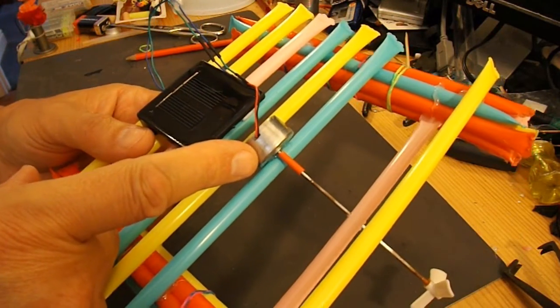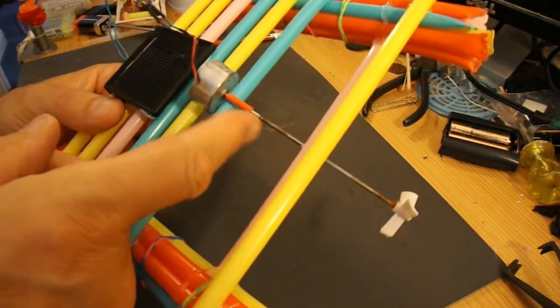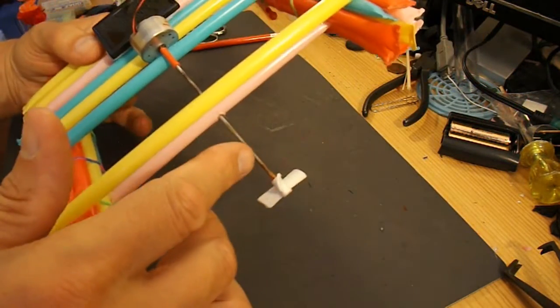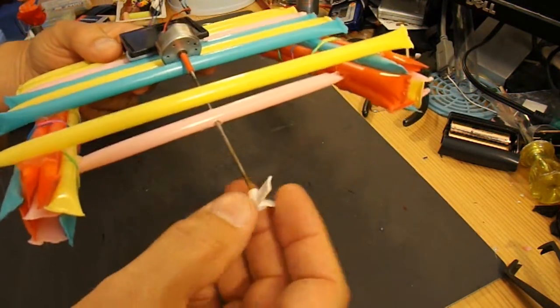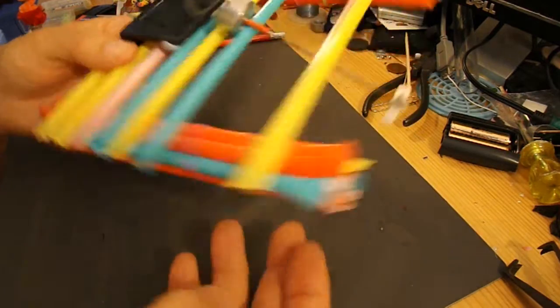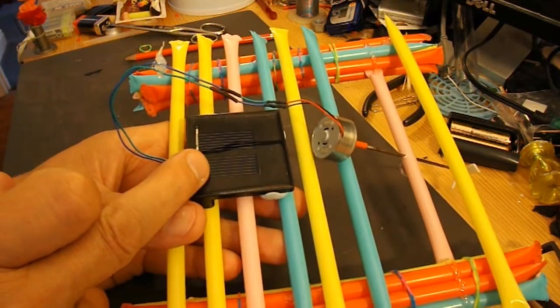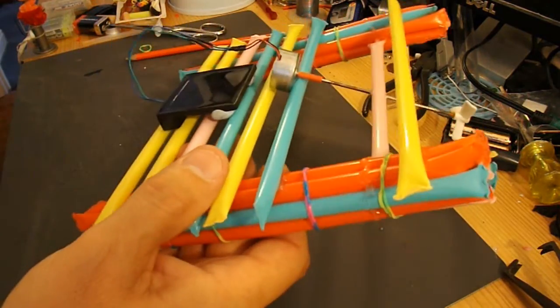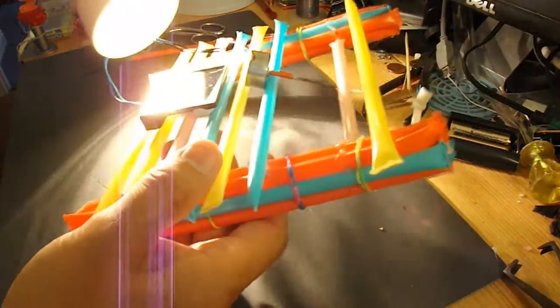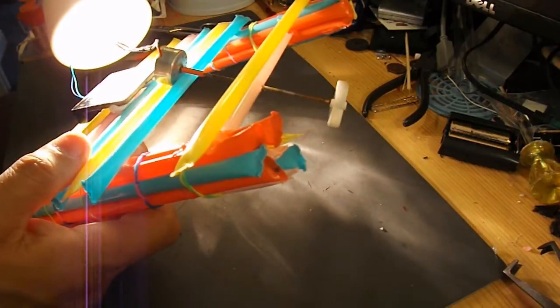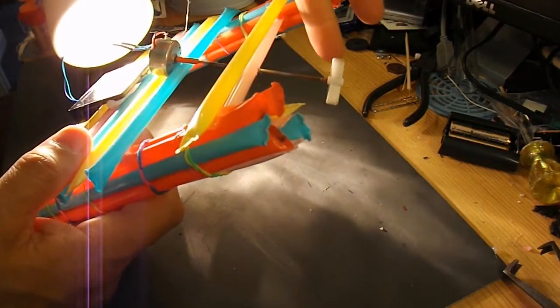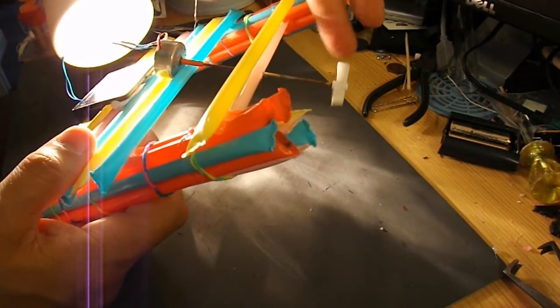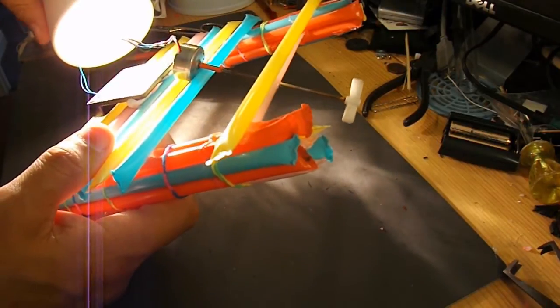Little electric motor. Shaft extended with a bit of bicycle spoke. Propeller on the end. Solar panel. Put the bright light on it. Propeller spins. So we'll have to see if we can make it float.